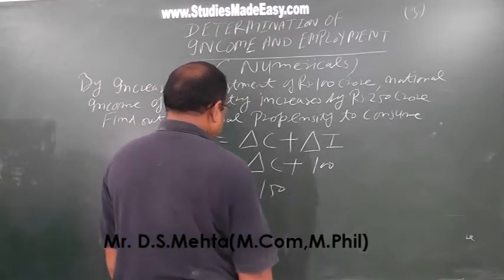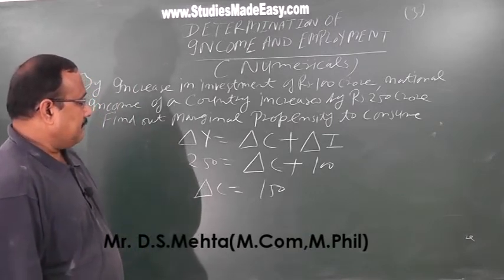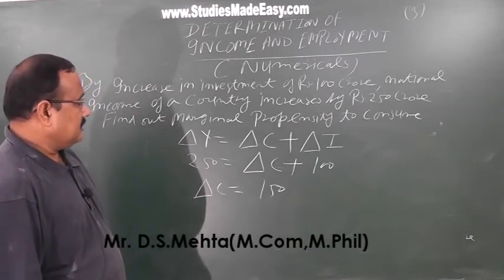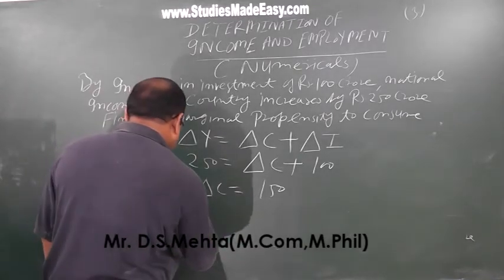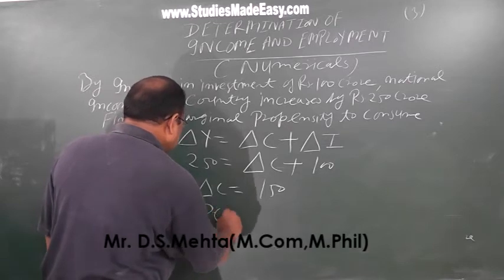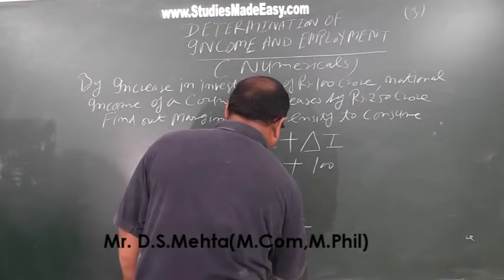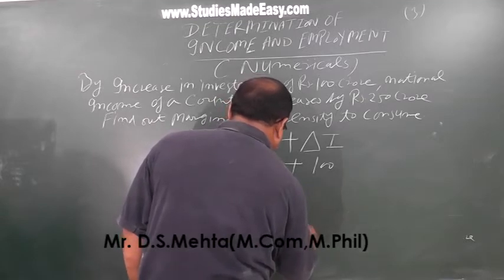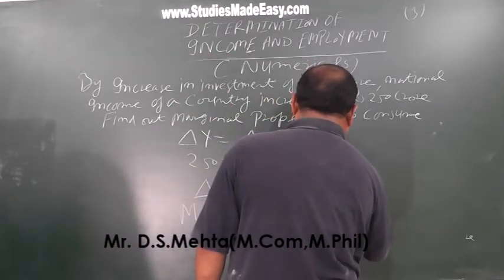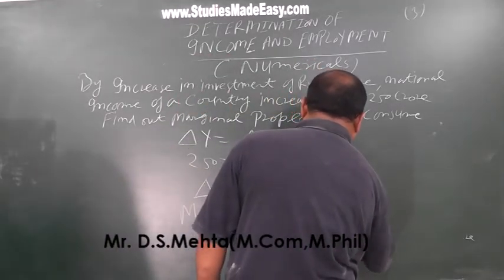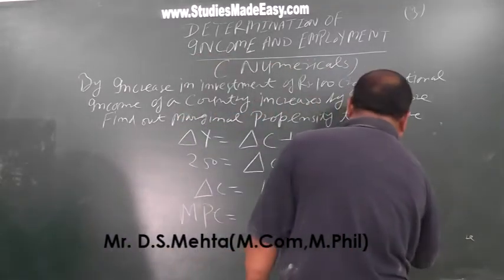तो Delta C आजाएगा 150 crore। Delta C आपने find out कर लिया। अब MPC निकालना है। MPC होता है change in consumption upon change in income, यानि कि Delta C upon Delta Y। तो 150 upon 250 is equal to 0.6 — यह step का solution हो जाएगा।